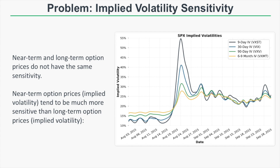The problem is that implied volatility for options with varying amounts of time until expiration do not have the same sensitivity. Near-term option prices tend to be much more sensitive than long-term option prices. Looking at the chart showing 9-day, 30-day, 90-day, and 6-to-9-month implied volatilities of SPX options, in an event that causes implied volatility to increase, the 9-day options increase the most while the 6-to-9-month options increase the least.